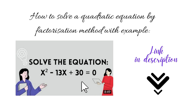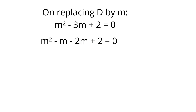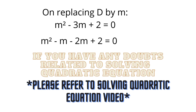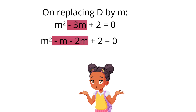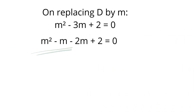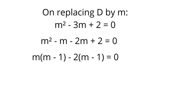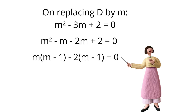Solving the quadratic equation m² minus 3m plus 2 equals zero by factorizing: we expand minus 3m as minus m minus 2m, giving m² minus m minus 2m plus 2 equals zero. Taking m common from the first two terms and 2 common from the last two terms, we get m(m minus 1) minus 2(m minus 1) equals zero, which gives (m minus 2)(m minus 1) equals zero. The two roots are m equals 1 and m equals 2.